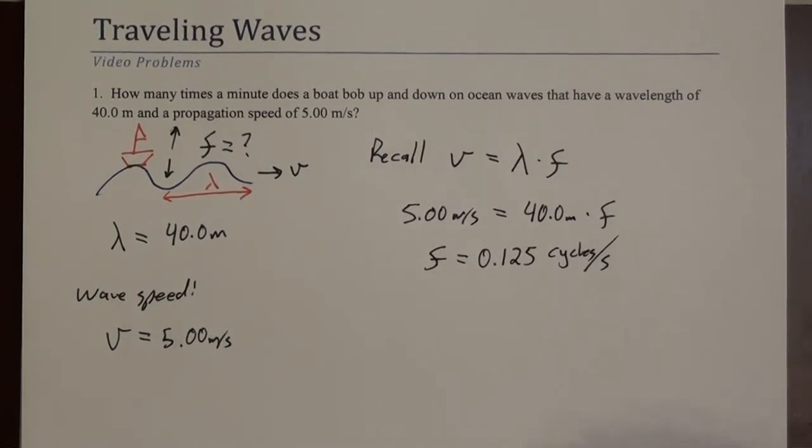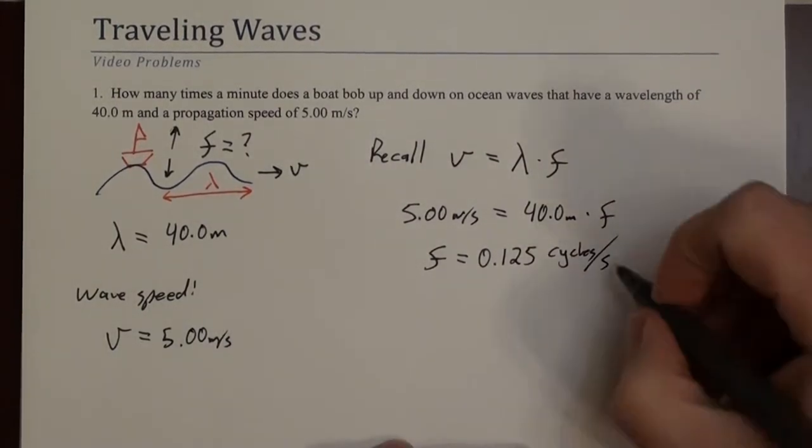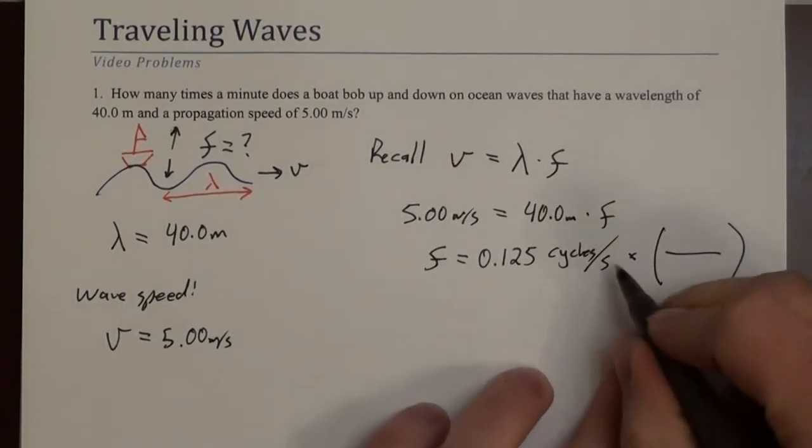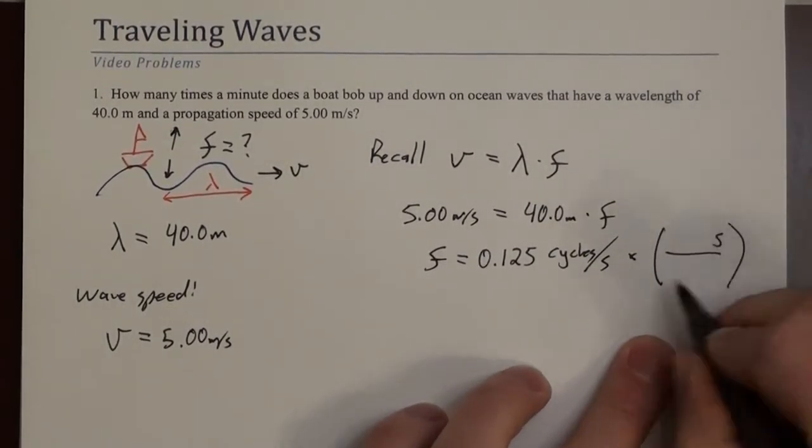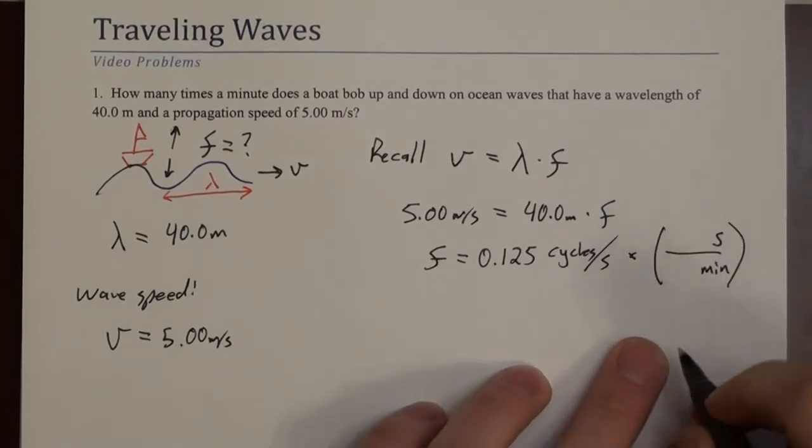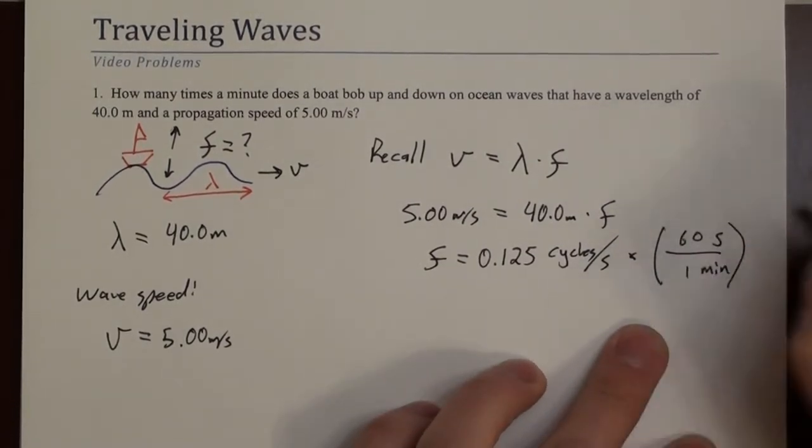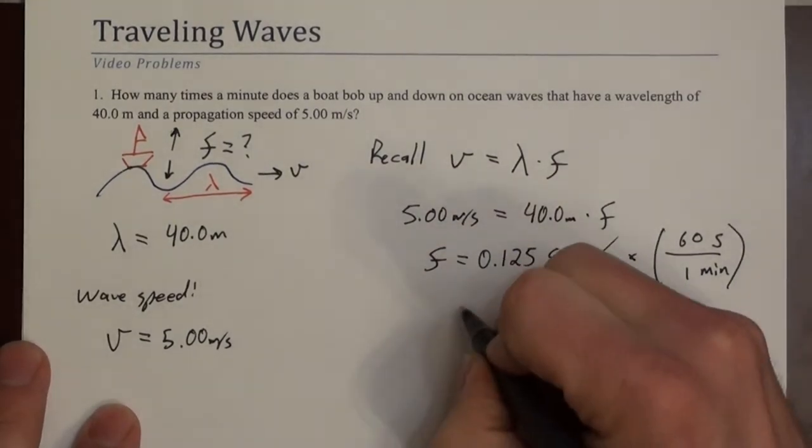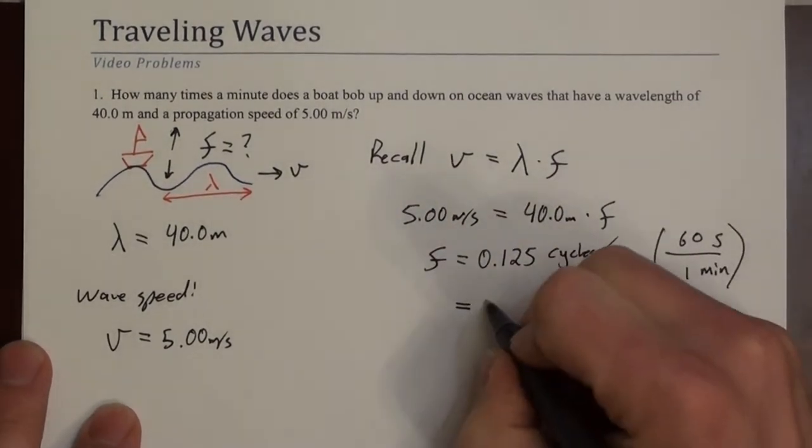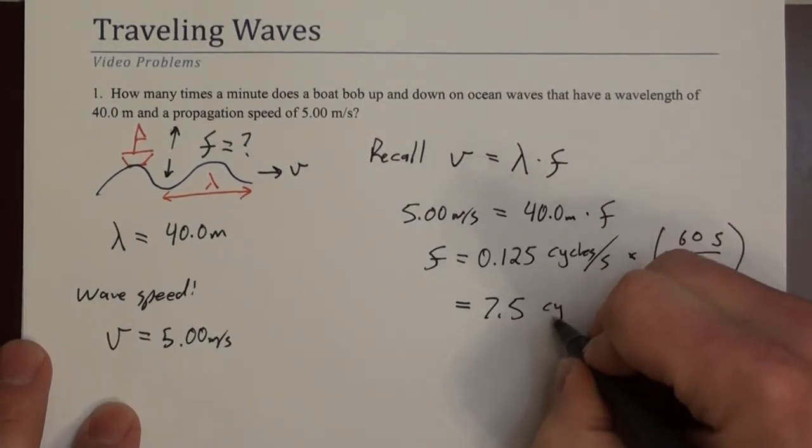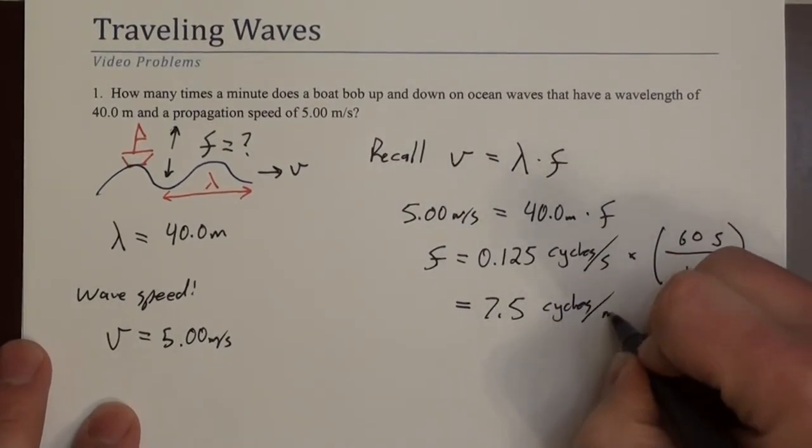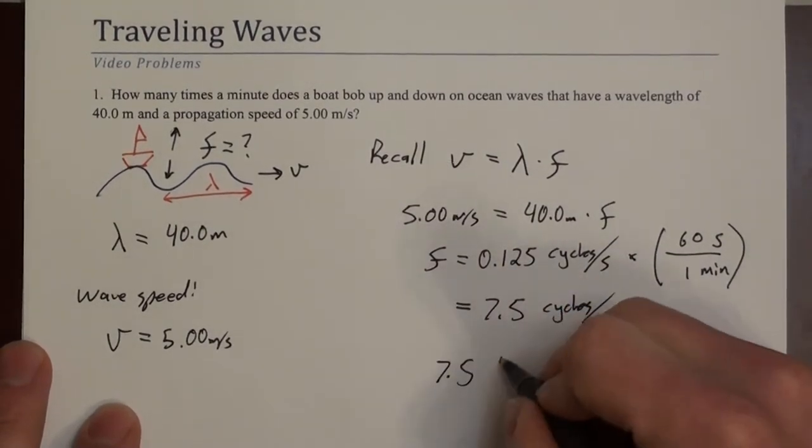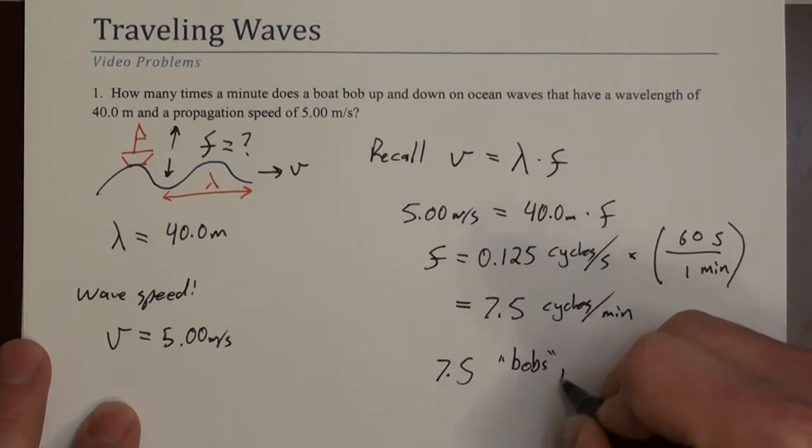All right, again, what we're wanting is cycles per minute. How many bobs do we have per minute? So I'm just going to convert this. I want to get rid of seconds, so it goes upstairs, and then you want minutes to show up downstairs. So there's 60 seconds in a minute. So I'm simply going to multiply this by 60. So what I get is 7.5 cycles per minute. So my answer is 7.5 bobs per minute.